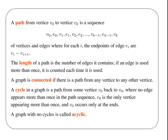A cycle in a graph is a path from some vertex V0 back to V0, where no edge appears more than once in the path sequence. That's when things are starting to get a little bit more complicated there. V0 is the only vertex appearing more than once, and it only occurs at the ends.